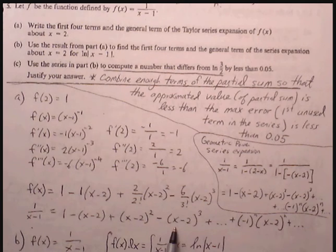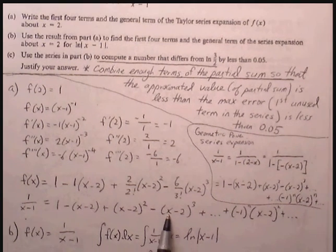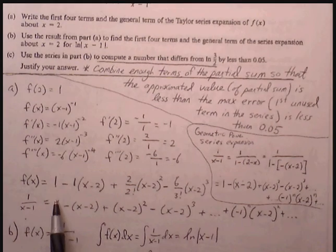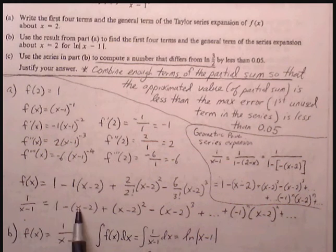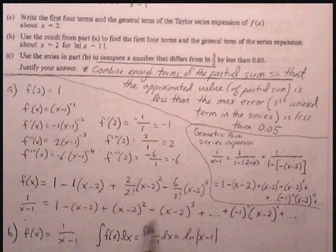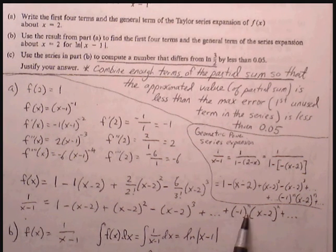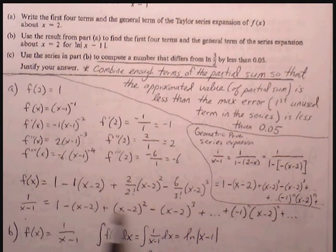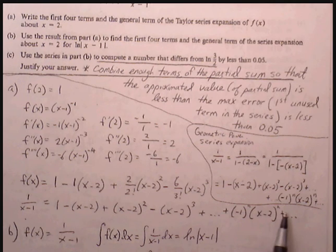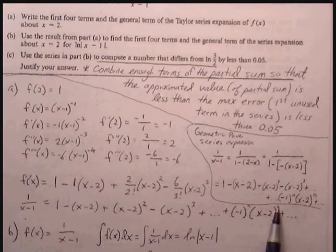If we want to write the general term, we know that this is an alternating series. So we can have (-1)^n, and each of the (x-2) terms is just being raised to the exponent n.